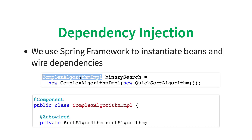This is what is called dependency inversion. ComplexAlgorithmImpl says: I don't need to worry about the sorting algorithm — whichever sorting algorithm you give me, I will work with it. You take the responsibility of providing which sort algorithm to use instead of me deciding. Dependency inversion is a concept in which all classes explicitly state their dependencies and create interfaces or abstract classes around them, so they can work with any implementation of that interface or abstract class. The result is loose coupling.